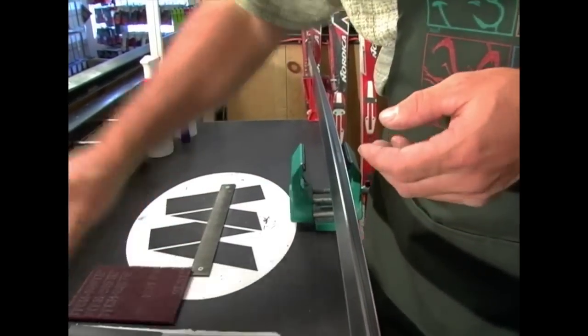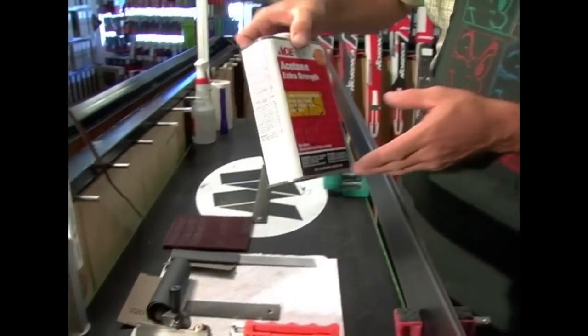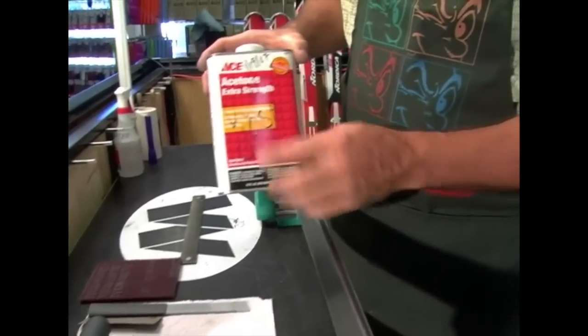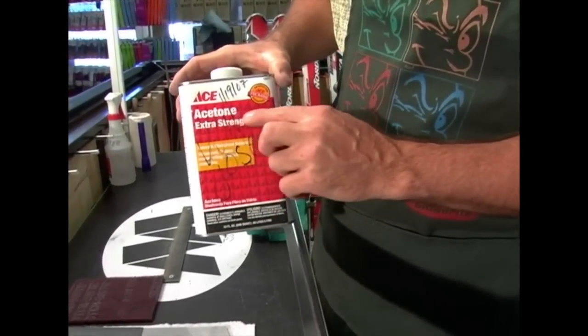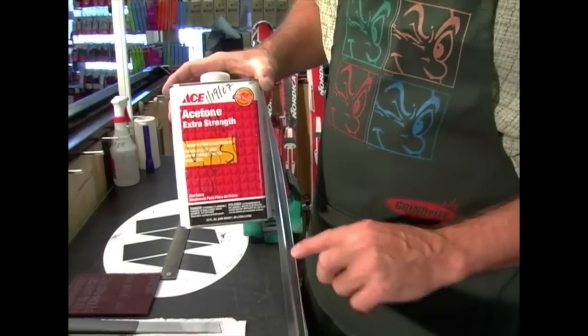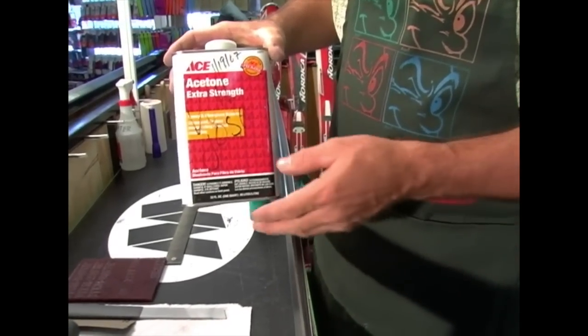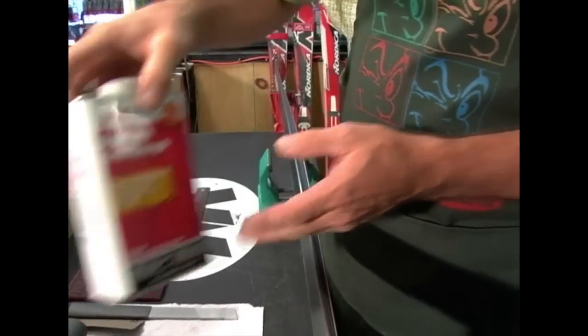Last but not least is using some acetone. Acetone on ABS helps you to flash the material so it becomes incredibly smooth and fast. For phenolic it just simply cleans it and I wouldn't use it on a cap ski.